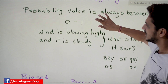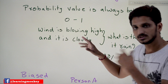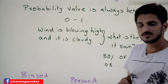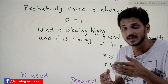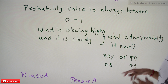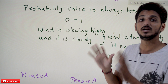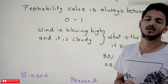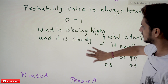The probability value is always between 0 and 1. For example, if the wind is blowing high and it is very cloudy outside, and someone asks what is the probability that it is going to rain, you might say 80% or 90% chance. We always express chances as percentages: 80% is written as 0.8, 90% as 0.9. If there is 100% chance it will rain in the next hour, the value is 1. That's why probability values are always between 0 and 1.